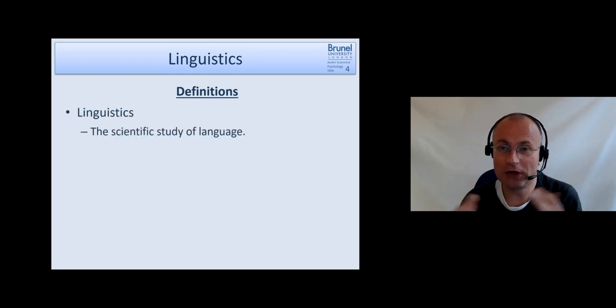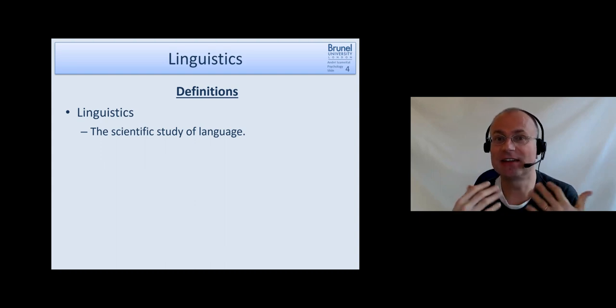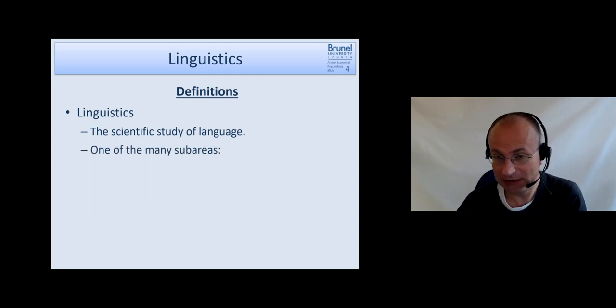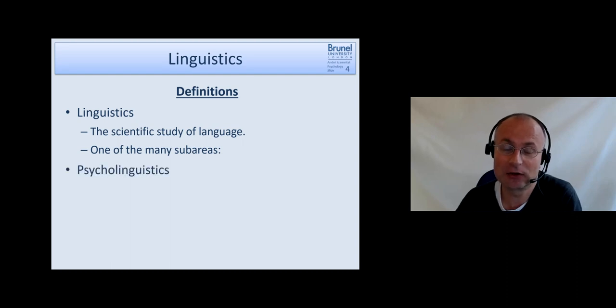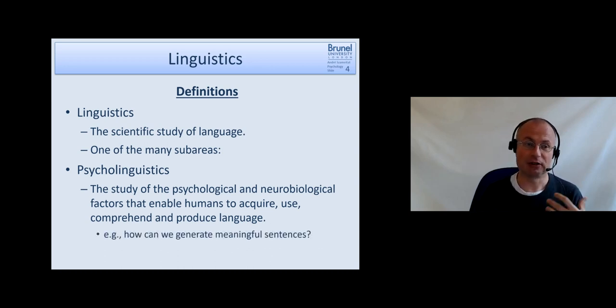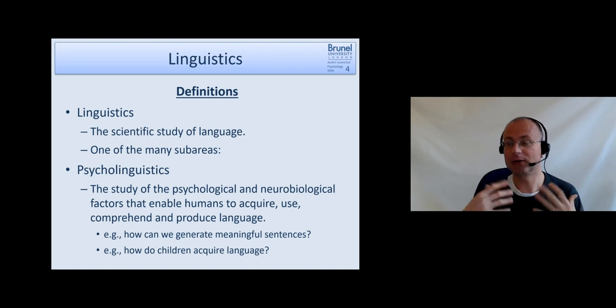What is linguistics then in this context? Linguistics is the scientific study of language. Linguistics has many sub-areas. One of the sub-areas is called psycholinguistics—it's about the psychological aspects of linguistics, the psychological and neurobiological factors which enable humans to acquire language, to use language, to comprehend and produce language. Typical questions are: how can we generate meaningful sentences, and how do children acquire language?